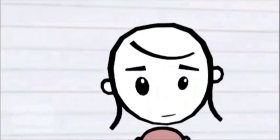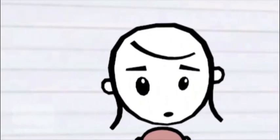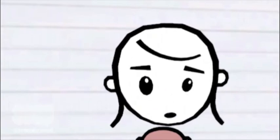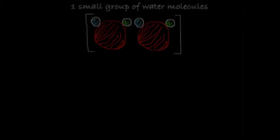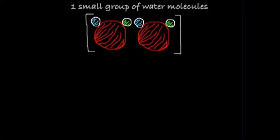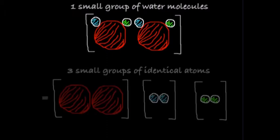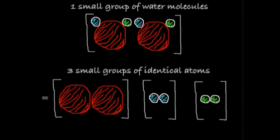A mole of water is a large group of molecules, but before we get to large groups we'll start with small groups of just two. Here's one small group of water molecules. How many small groups of identical atoms can this be broken into? Since there are three atoms per molecule, we can break one small group of water molecules into three small groups of identical atoms.